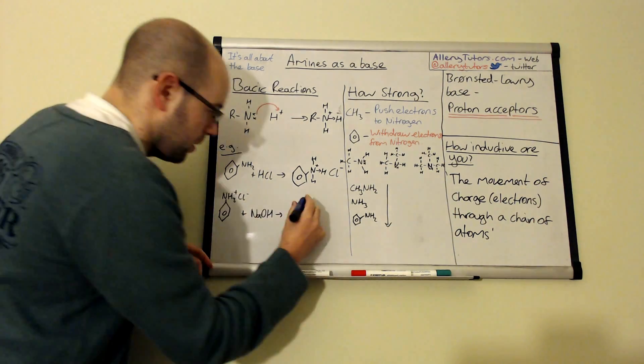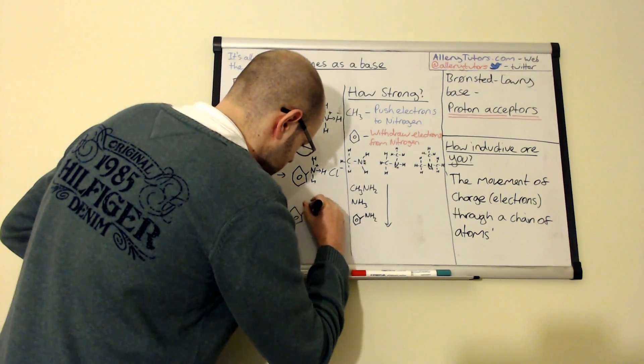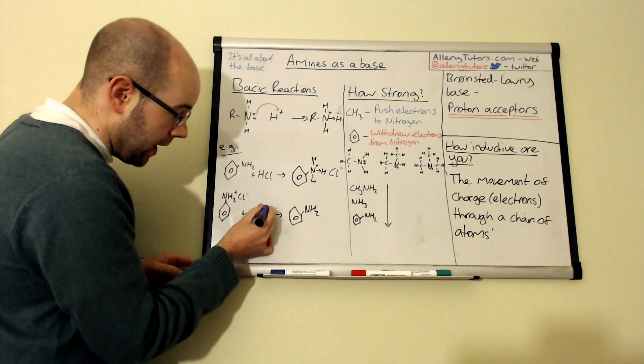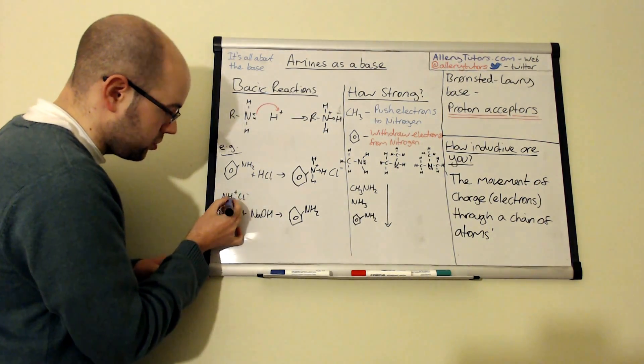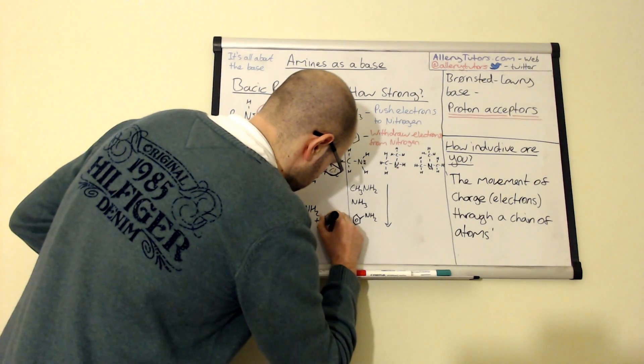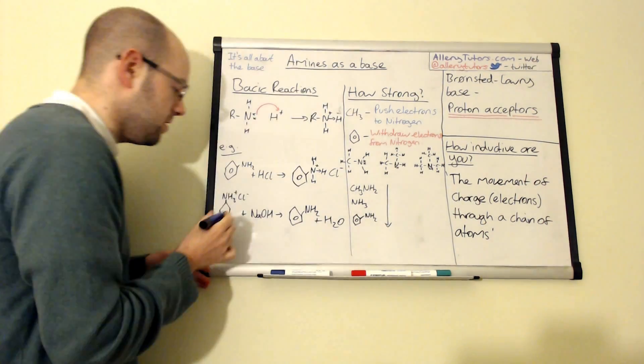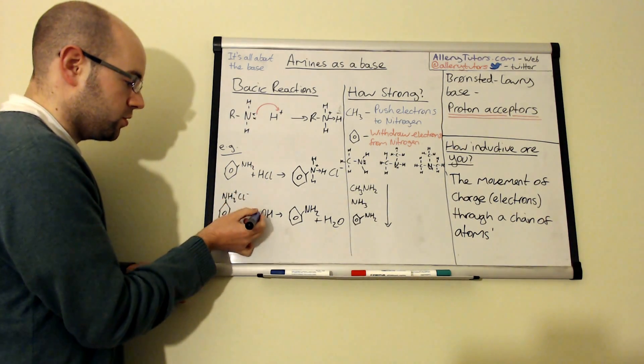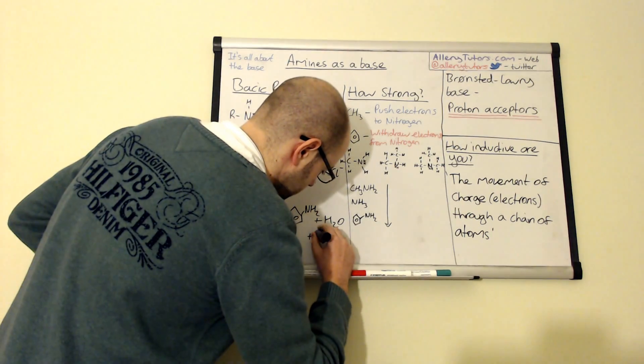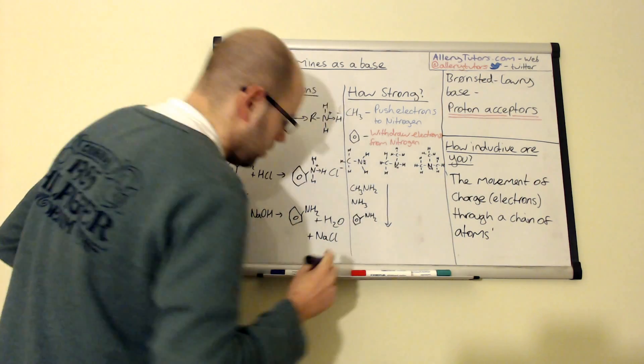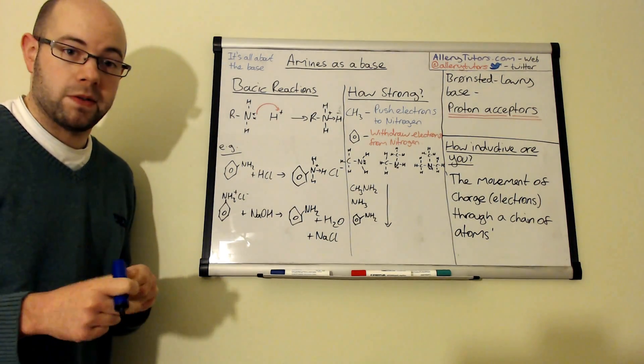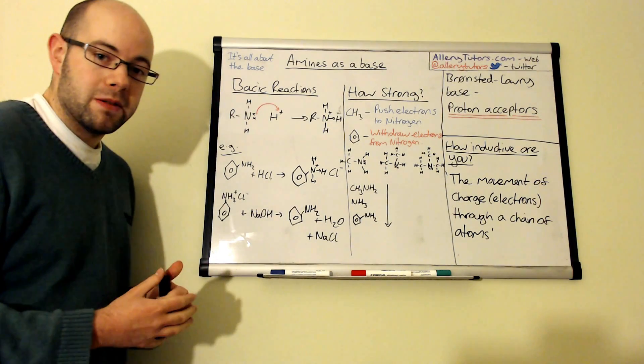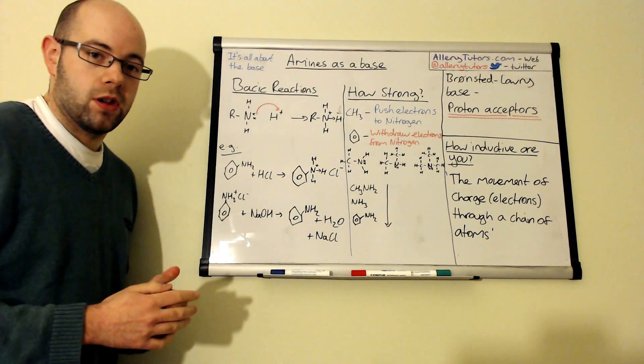So the proton will come off here and so what we have is NH2 that's formed back again and the OH here will react with the hydrogen that's just come from here and that will form water and you can see that you've also got the chloride ion that's left. This will react with the sodium from your strong base and this will form another salt, sodium chloride which again is very soluble in water. So you actually form your insoluble amine back again with water and sodium chloride.